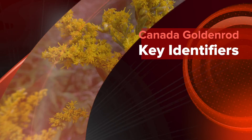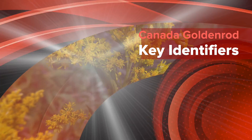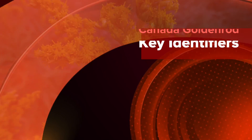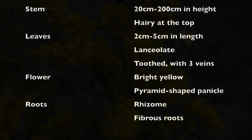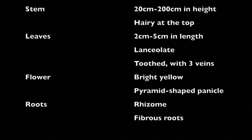To recap, the key identifiers of Canada goldenrod are: a stem 20 to 200 centimeters in height with toothed lanceolate leaves, yellow flowers arranged in a pyramid-shaped panicle, and a rhizome root system with fibrous roots.